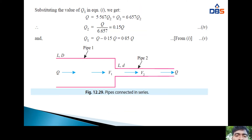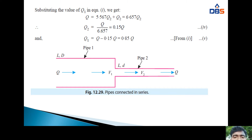Substituting Q1 equals 5.657 Q2 into Q equals Q1 plus Q2: Q equals 5.657 Q2 plus Q2 equals 6.657 Q2. Therefore Q2 equals Q divided by 6.657 equals 0.15 Q, and Q1 equals Q minus 0.15 Q equals 0.85 Q.